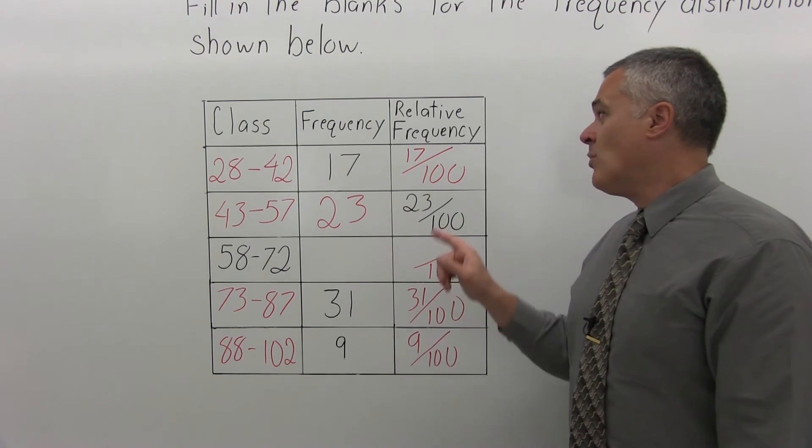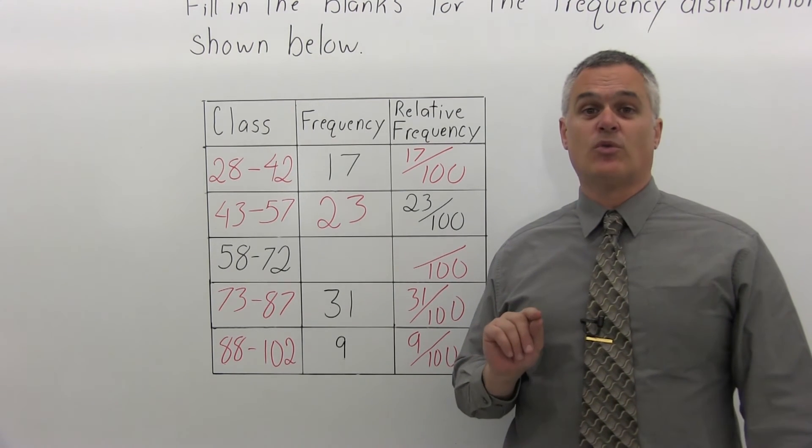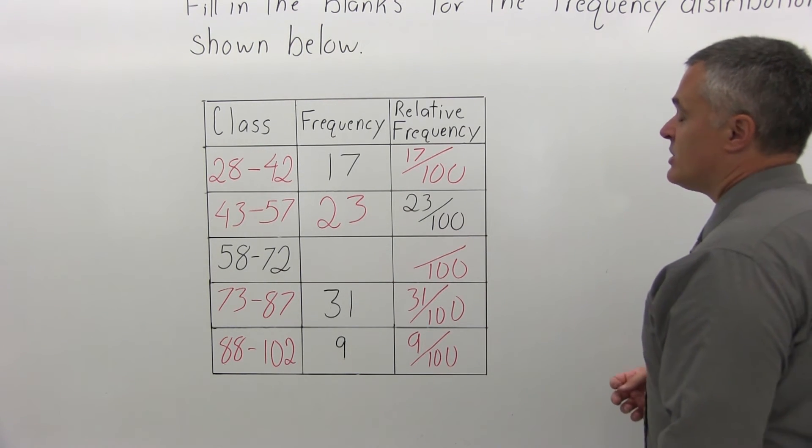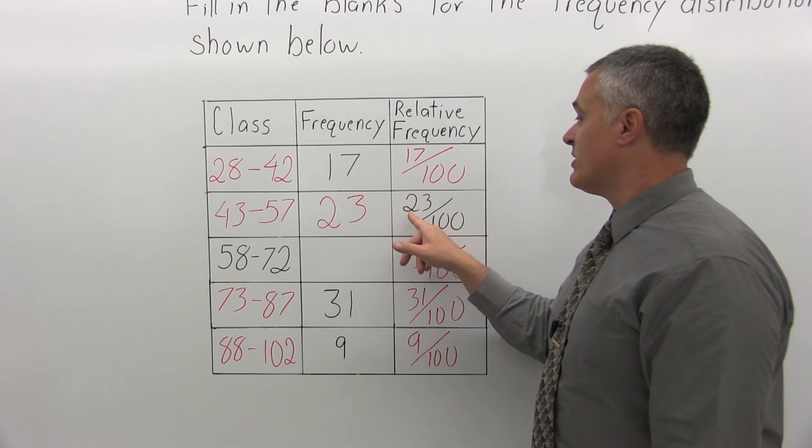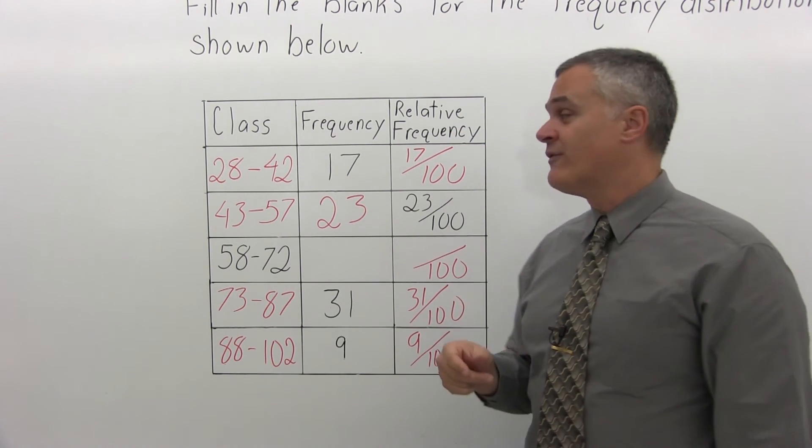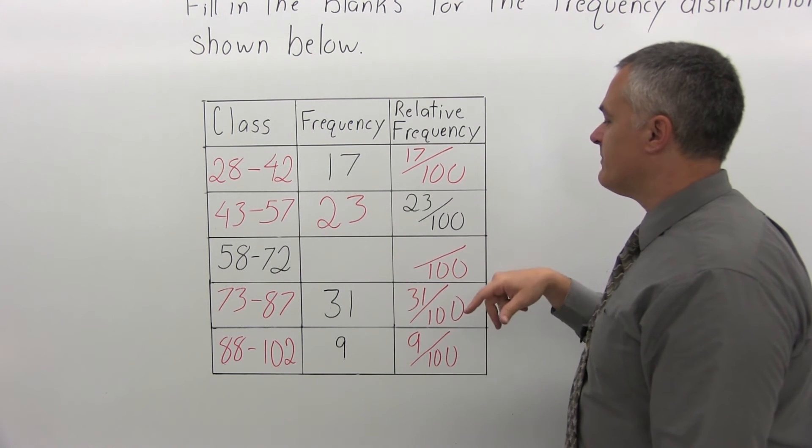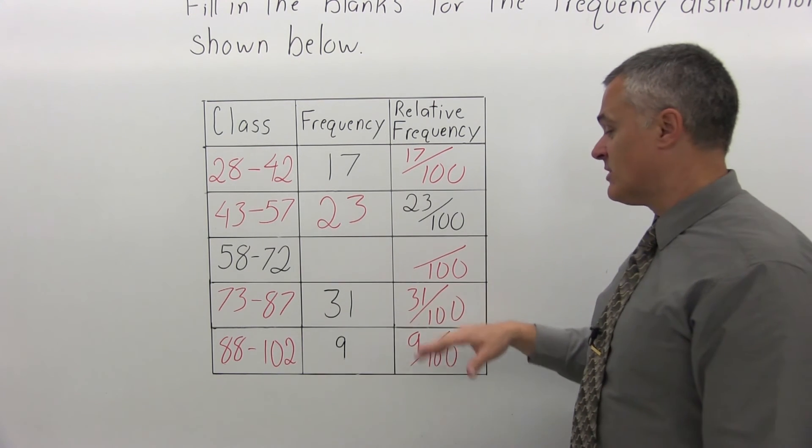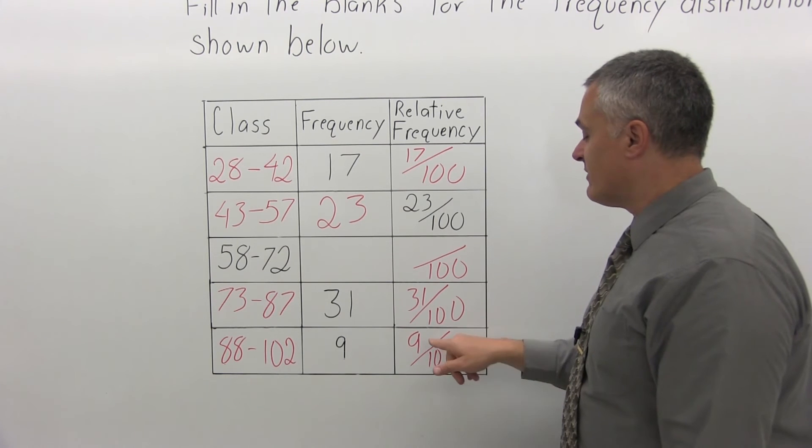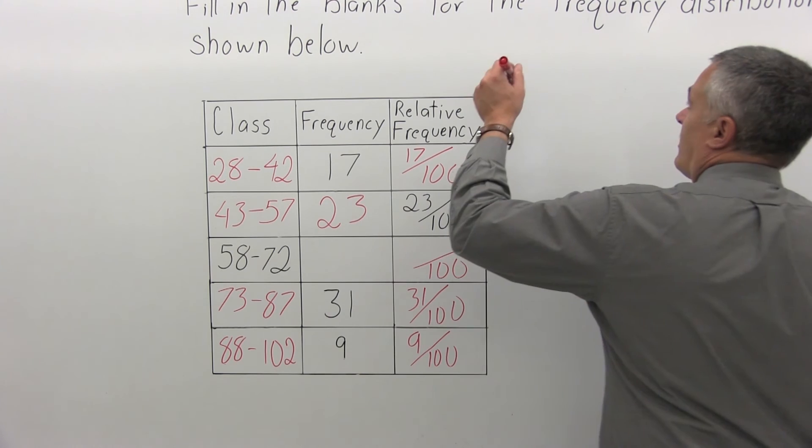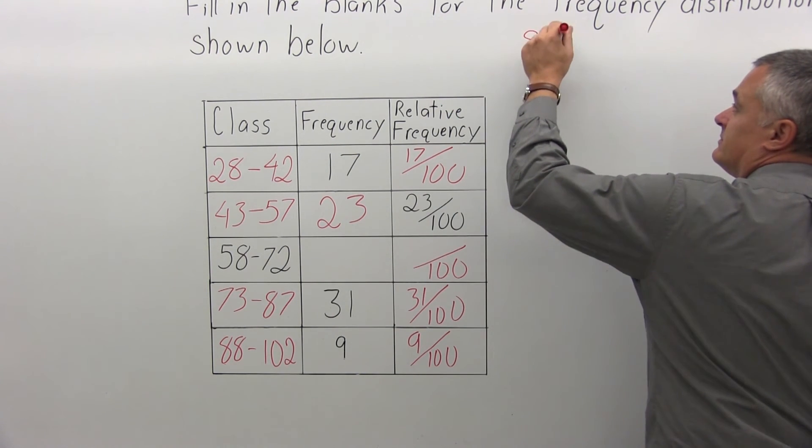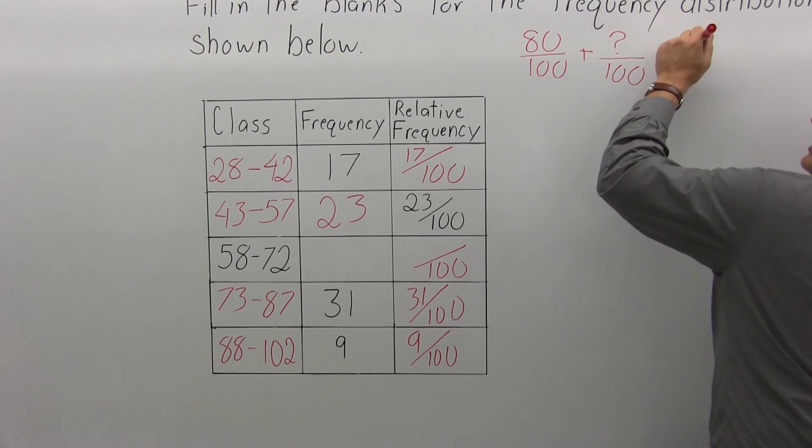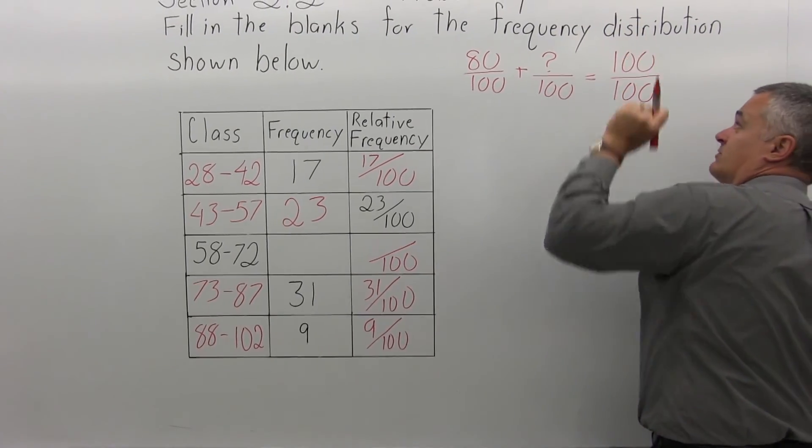Now for that last missing part, what you need to remember is that the relative frequencies add up to a total of 1. And since the denominator we're working with is 100, that 1 can be written as 100 over 100. So, let's add up what we have so far. 17 over 100 plus 23 over 100, I have a common denominator of 100. The 17 and the 23 add up to 40. So I have 40 over 100. And I'll skip the unknown one for a minute. 40 over 100 plus 31 over 100, just add the numerators to keep the common denominator of 100. 40 and 31 adds up to 71. So that was 71 over 100. And then you add the fraction underneath. 71 and 9 would be 80 over your common denominator of 100. So, I have 80 over 100 for the parts that are known. Plus, the missing one, some unknown amount over 100 is going to add up to a total of 1, which can be written in the form of 100 over 100.